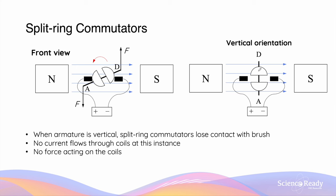And when this occurs, the gap between the two commutators will be parallel to the horizontal plane where the brushes are located. In this position, the two commutators will momentarily lose contact with the brushes.